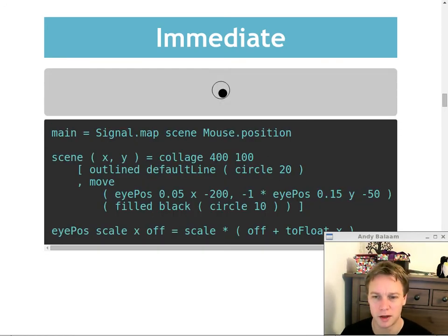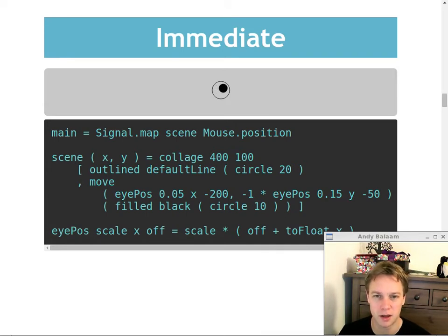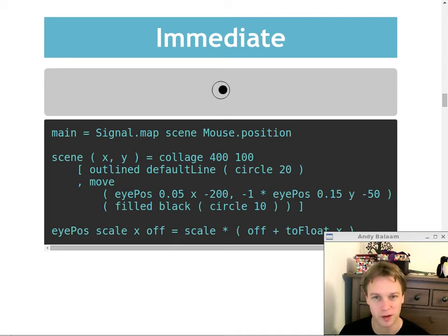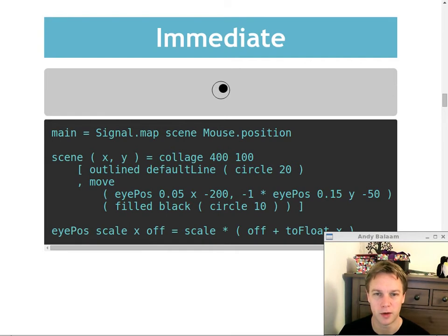A little bit more about how immediate Elm is - you can do really fun things really easily. I've made a little program that makes this eye follow my mouse around the screen. I've cheated slightly because what's below isn't the full code - I've missed out the imports at the top. But except for the imports, this is the full code for this little program where an eye follows my mouse around the screen. You can see it's good for interactive websites - this kind of example shows it's good for a game.